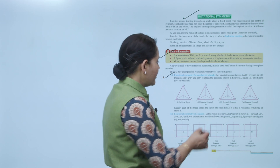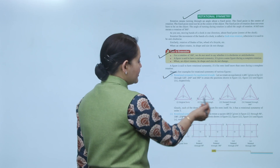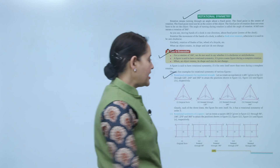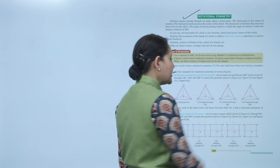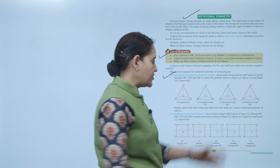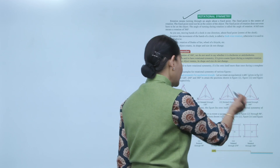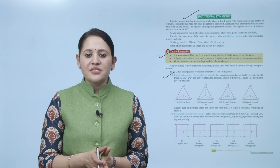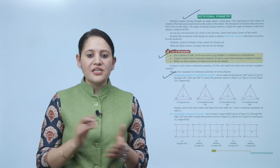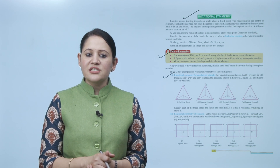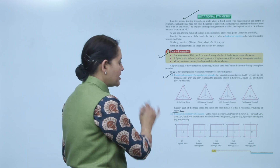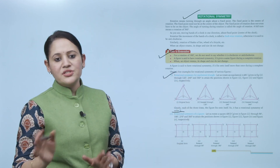Then we rotate again to 240 degrees — A moves here, B goes here, and C goes here. Again we rotate to 360 degrees and it comes to its original position with A, B, and C back in place. Clearly the figure fits onto itself 3 times.